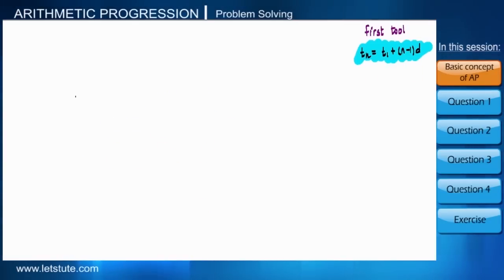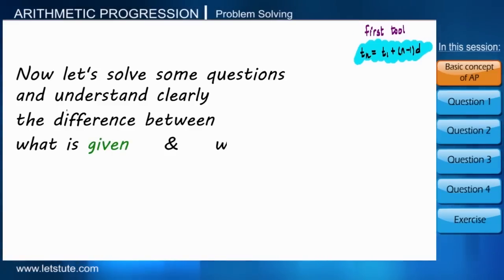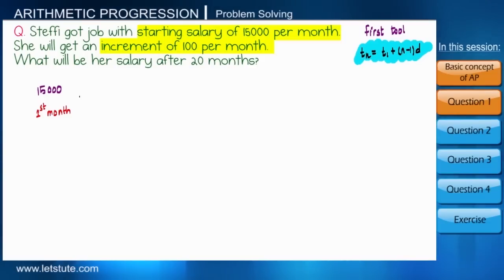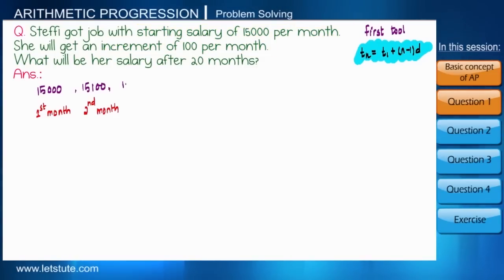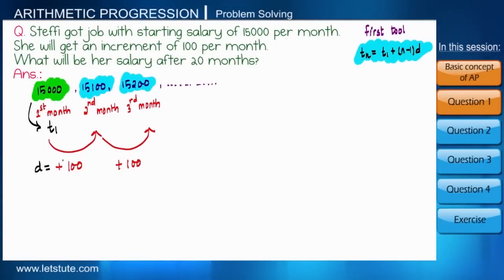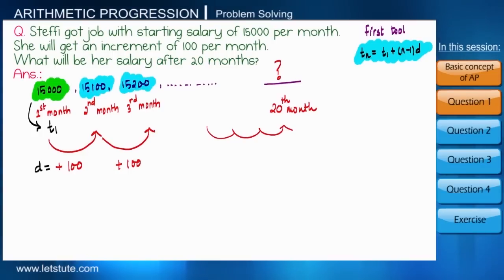It can be difficult to identify what is given and what we need to find, so let us learn how to approach it. Consider this situation: Stephi's salary in the first month is fifteen thousand, and every month she gets an increment of one hundred. So in the next month she gets fifteen thousand one hundred, then fifteen thousand two hundred, and so on. The first term t1 is fifteen thousand, and the common difference d is one hundred.